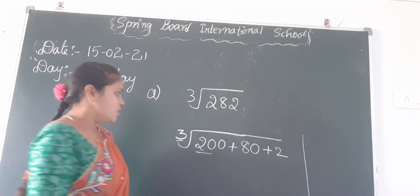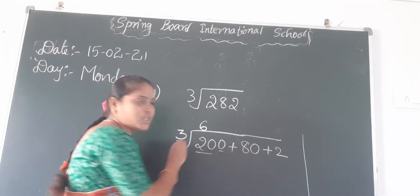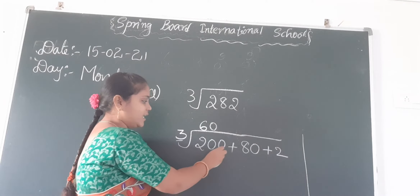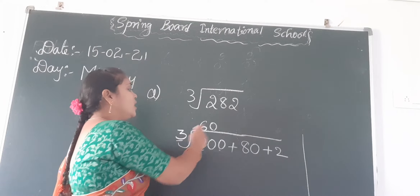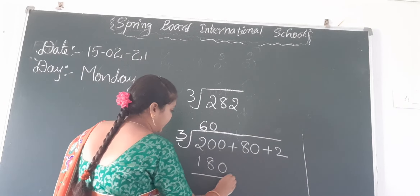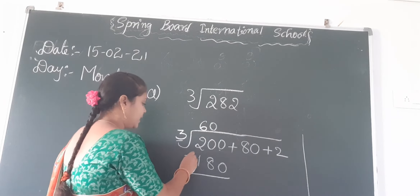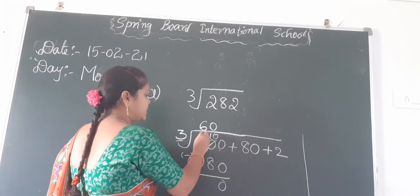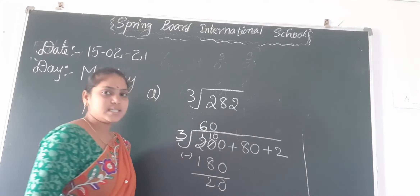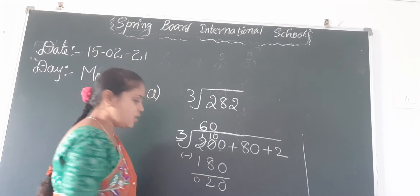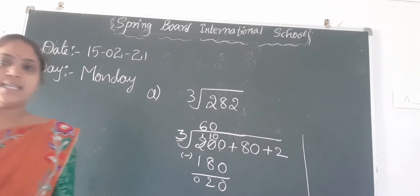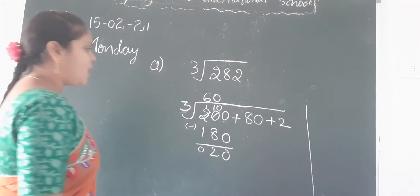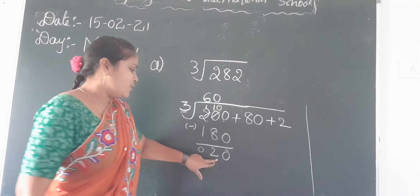So 3 sixes are 18. There is a zero in the ones place, so write this 0 here — meaning 3 sixes are 180. Now do subtraction: 0 minus 0 is 0. 10 minus 8 is 2, and the hundreds give 0. So the remainder here is 20. Now observe: here we have 80, and 20 is the remainder.